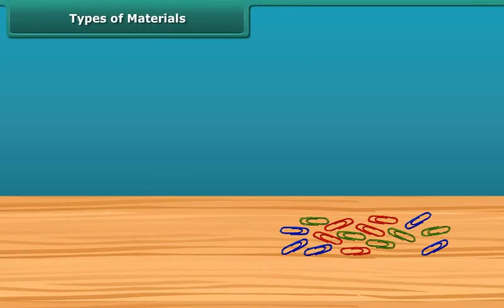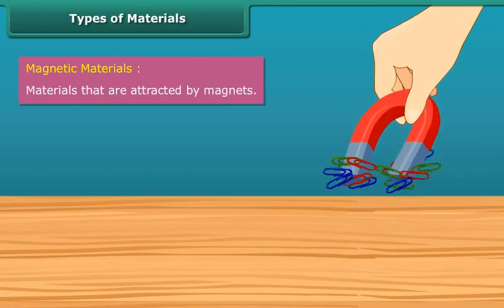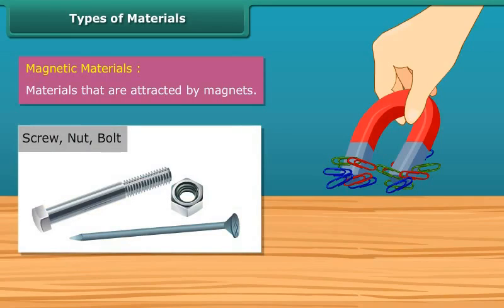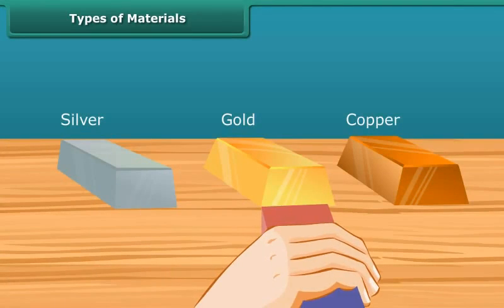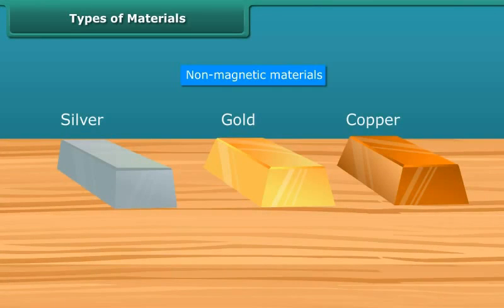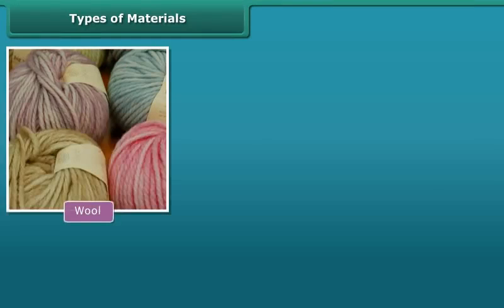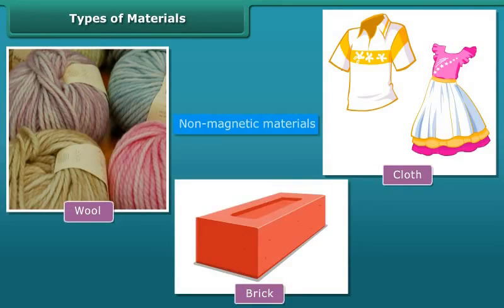Now let us look at the types of materials. Materials that are attracted by magnets are called magnetic materials. For example, screws, nuts, and bolts are magnetic materials. Materials that are not attracted by magnets are called non-magnetic materials. For example, wool, cloth, and bricks are non-magnetic materials.